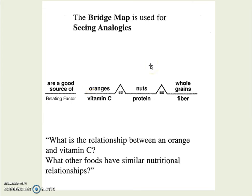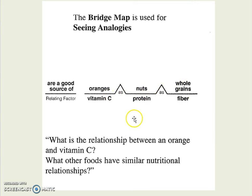Last is something the kids really need to know before they take the SAT, GRE, things like that — and that's analogy, shown in a bridge map. The relating factor here is 'are a good source of.' Oranges are a good source of vitamin C, just as nuts are a good source of protein, just as whole grains are a good source of fiber. The kids show their knowledge by making a bridge map to show an analogy.